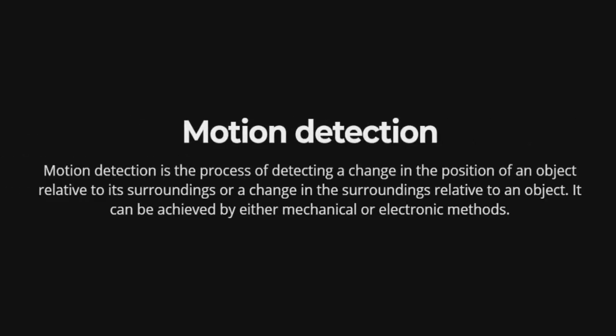Motion detection is the process of detecting a change in the position of an object relative to its surroundings, or a change in the surroundings relative to an object. It can be achieved by either mechanical or electronic methods.